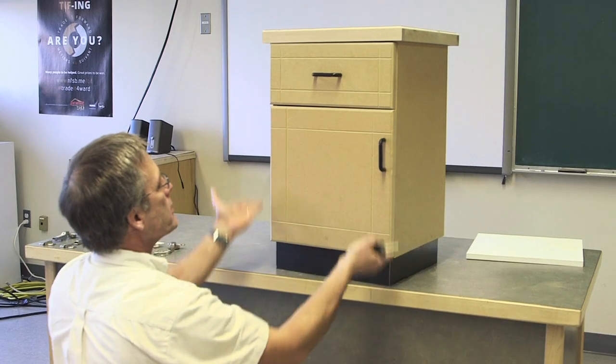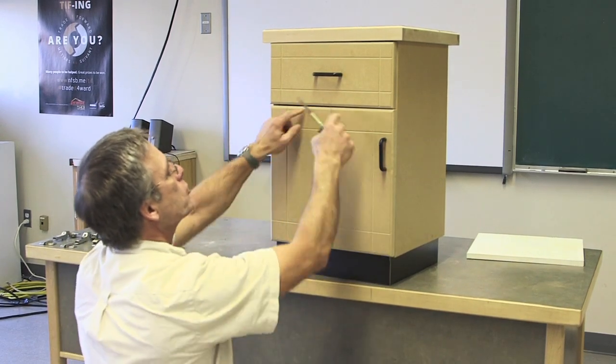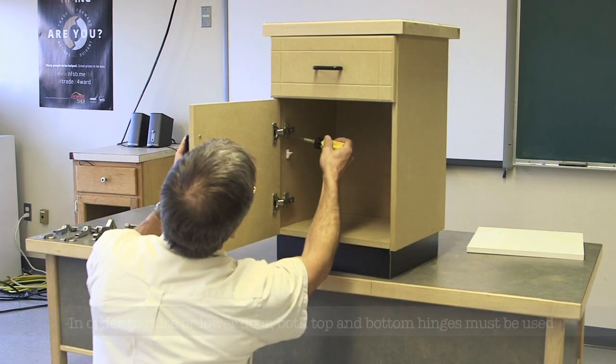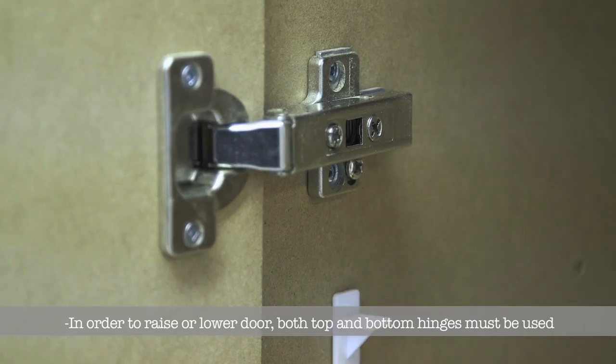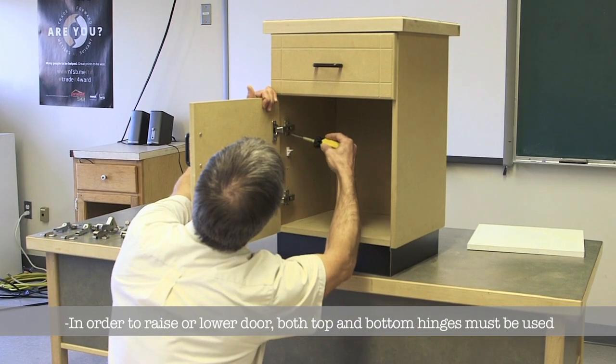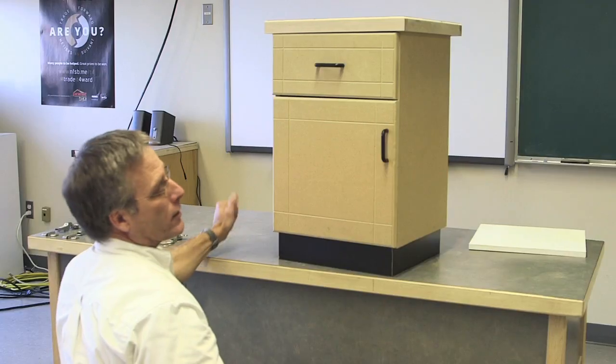Adjustment number two is raising or lowering the door entirely. It could be that my whole door is too high and I'm bumping into my drawer right here. This adjustment here is done on this little screw that's here. And I'm going to loosen this screw. I'm going to drop the whole thing down. Tighten it back again. And you can see that I have a much bigger crack there.